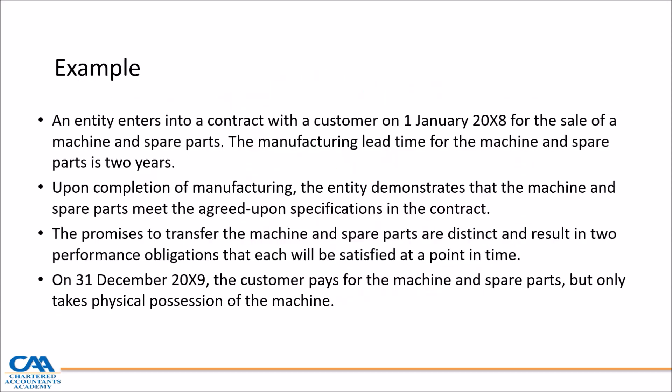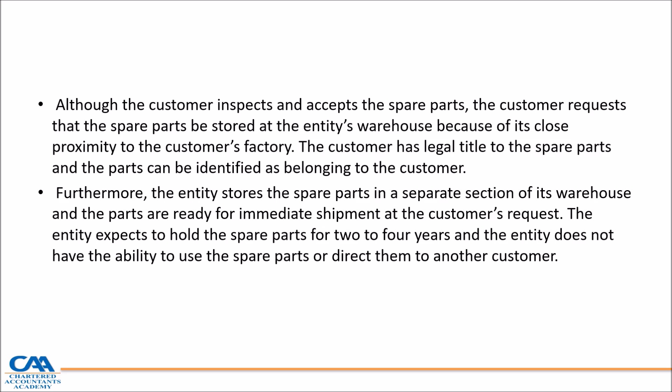Go through the example in your module — the sale of machine and spare parts. Upon completion, the entity demonstrates the machine and spare parts meet agreed-upon specifications. There is a distinct promise to transfer the machine and spare parts. The customer pays for the machine and spare parts but only takes physical possession of the machine — the entity is still holding the spare parts. You need to ask: does the entity actually control these spare parts? Are they specifically labeled as the customer's spare parts in a specific area of the warehouse? Go to the standard to find the answer.